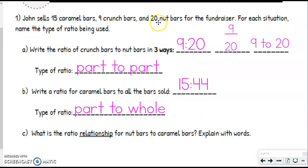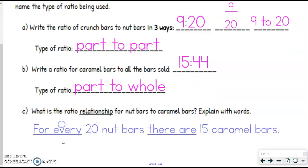Nut bars, there are 20 of those, versus caramel bars, there are 15. So we're going to say for every 20 nut bars, there are 15 caramel bars. That is all you're saying with a ratio relationship. That's what it means.